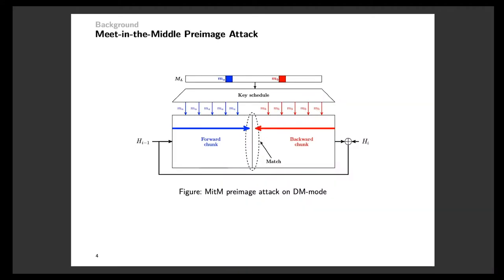The preimage attack against the hash function is to find the message whose digest equals a given value. The meet-in-the-middle preimage attack is to split the compression function into two sub-functions. The one computed in the forward direction is called the forward chunk, while the one computed backward is called the backward chunk. The chunk separation satisfies the requirement that a part of the input message only affects one chunk, and another part only affects the other chunk. The bits of a message affecting only one chunk are called neutral bits.